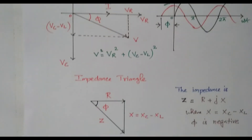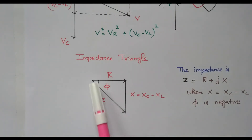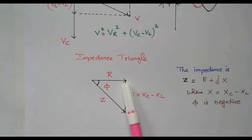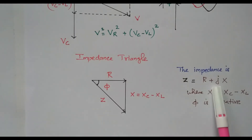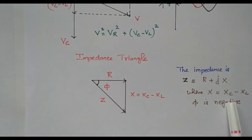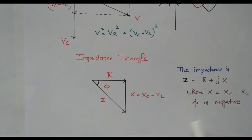Now the impedance triangle for Case 3: the resistance is in phase. Because voltage is lagging, the net reactance is drawn in the downward direction — this is Xc minus Xl, since Xc is more and Xl is less. The vector sum of these two gives the impedance Z equals R plus jX, where X equals Xc minus Xl. The phase angle phi is also negative.